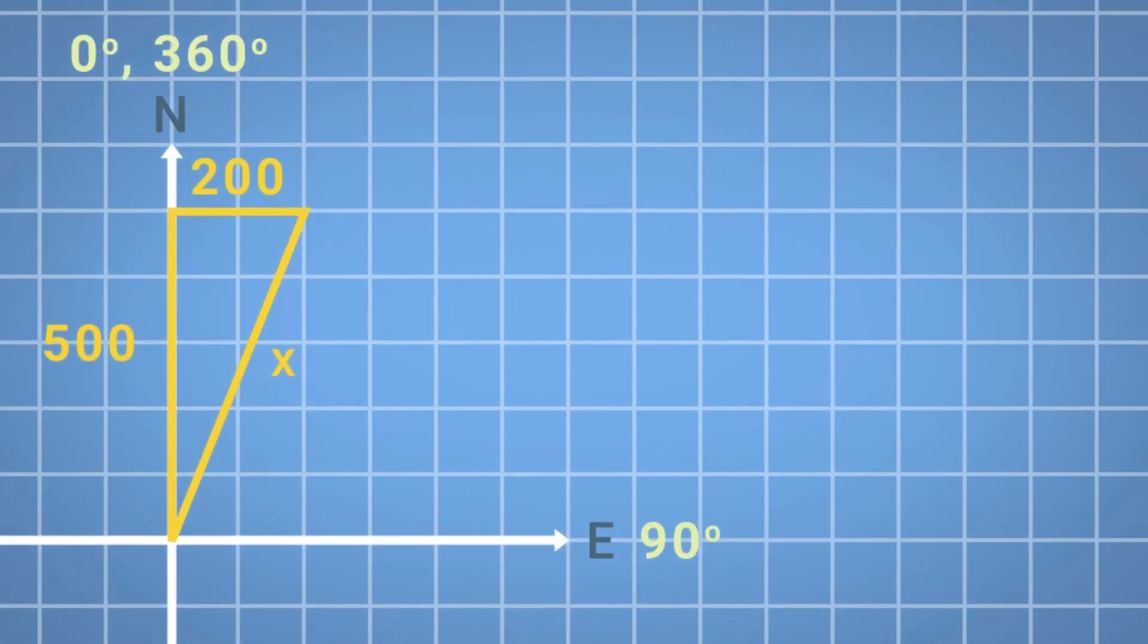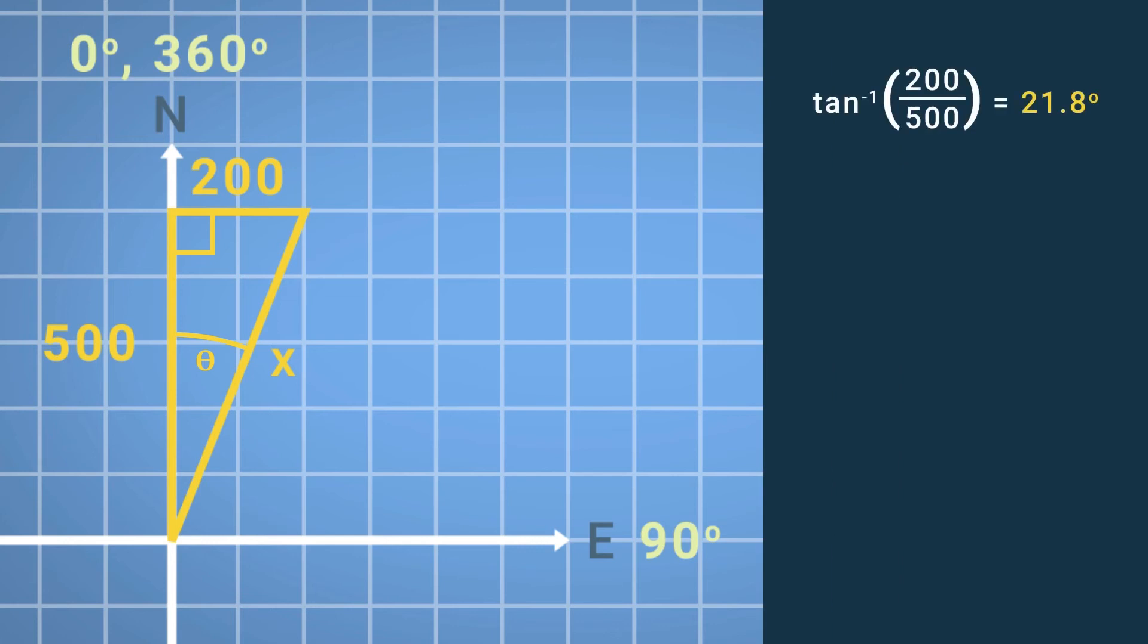If we now zoom in, we can see that we have a right-angled triangle, and that the angle formed at the bottom, known as theta, can be calculated through trigonometry. Equally, the length of the hypotenuse can be calculated using Pythagoras' theorem.